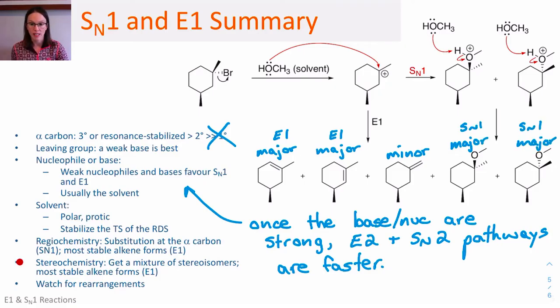In terms of stereochemistry, in the SN1 substitution reaction, we get a mixture of stereoisomers, a mixture of inversion and retention of configuration of that alpha carbon.